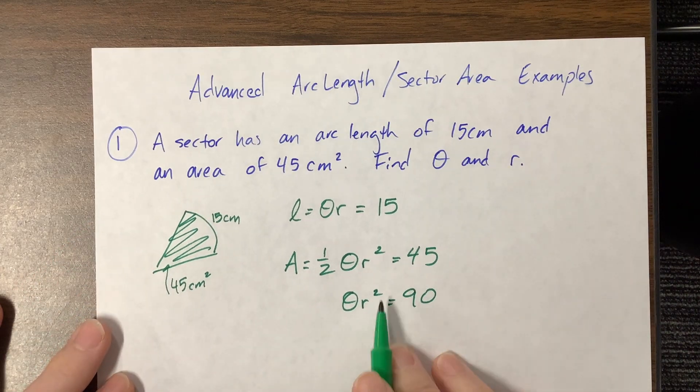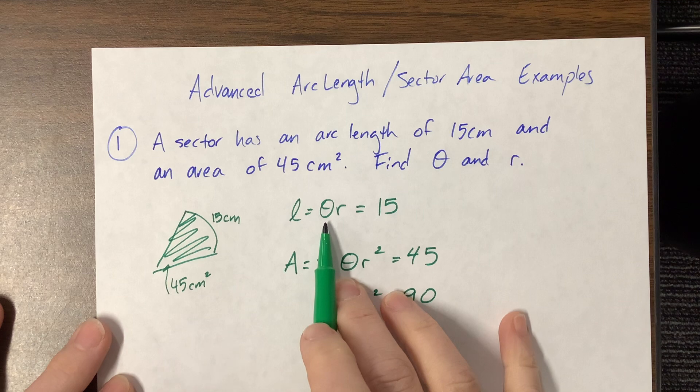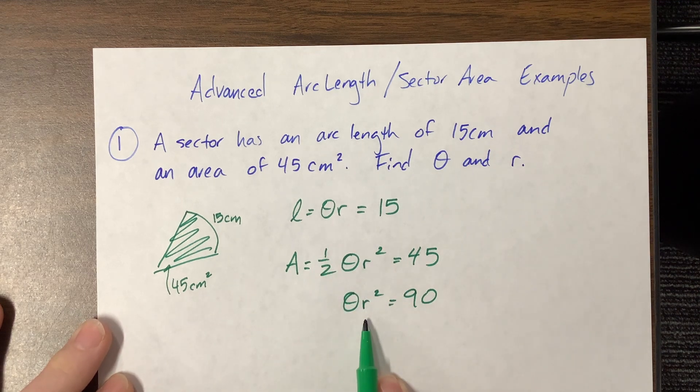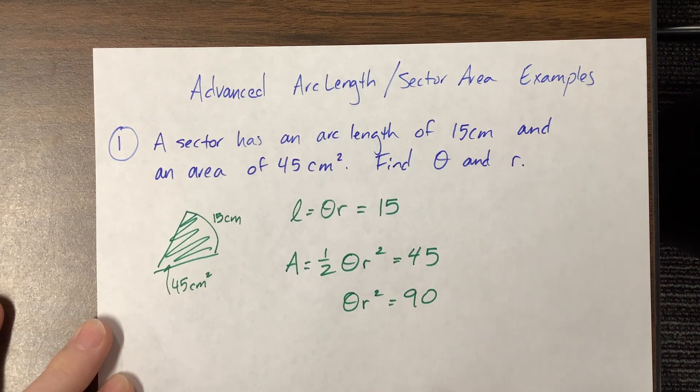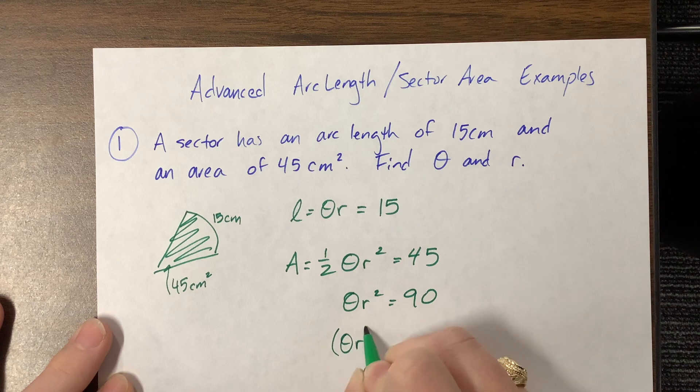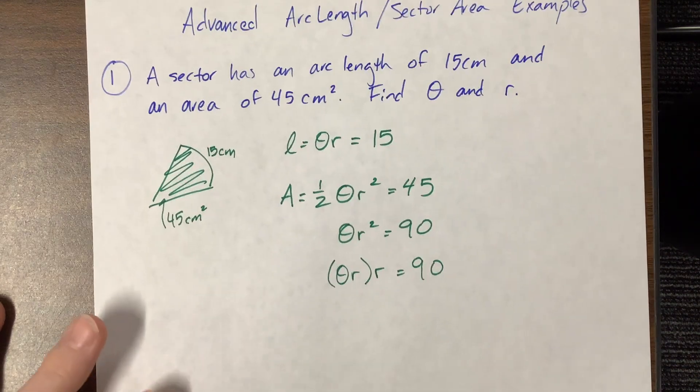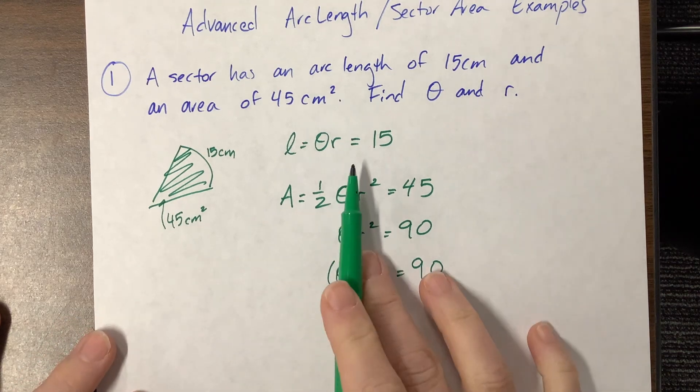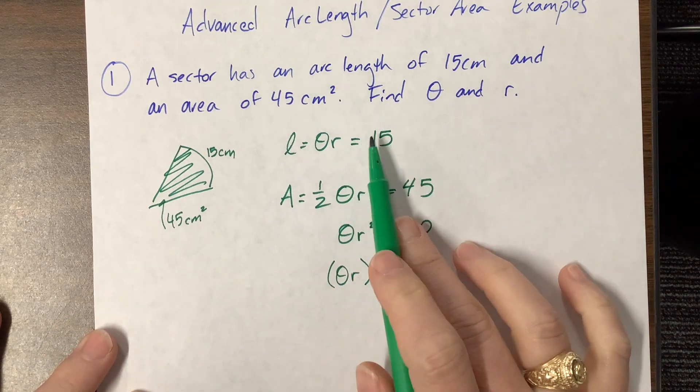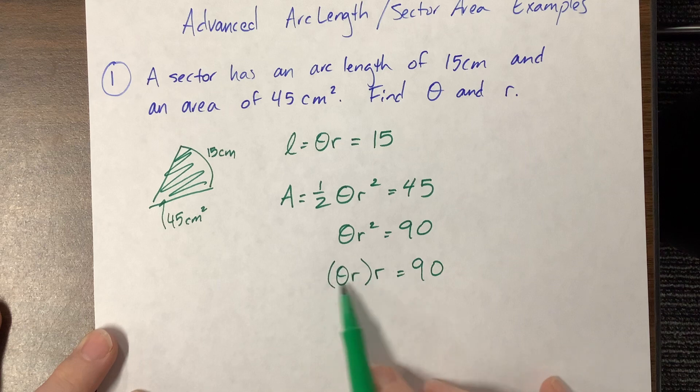What I notice is that I've got a theta r that are multiplying together and a theta r times another r. So this, I could rewrite this as theta r times r is equal to 90. This is not the only way to do this problem but it sure makes things easier for us. So now I can take this theta r and plug it in right here.